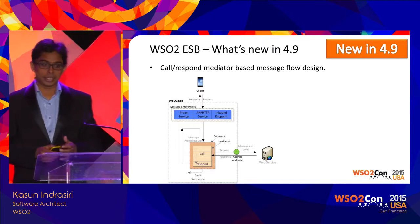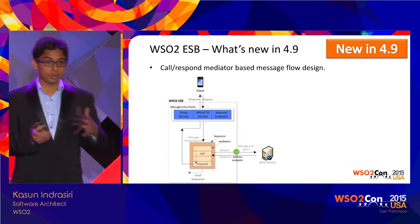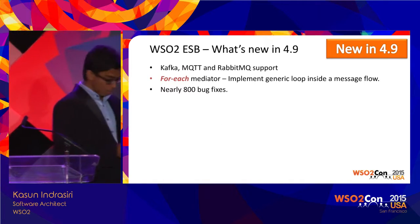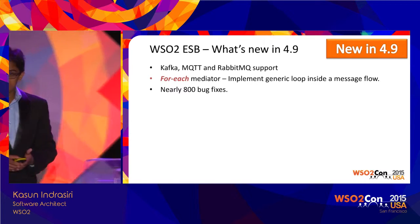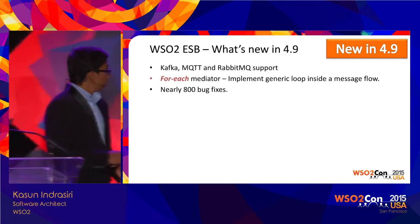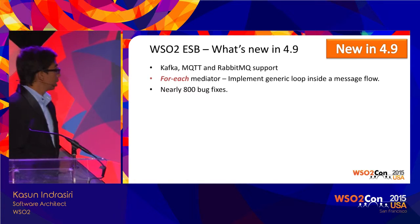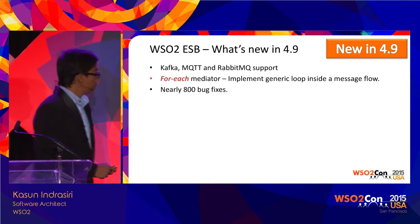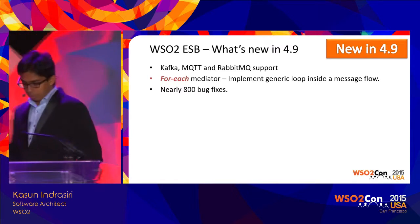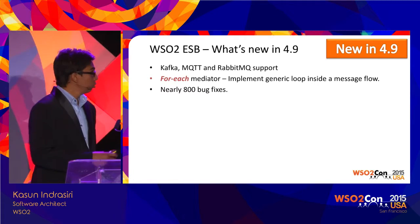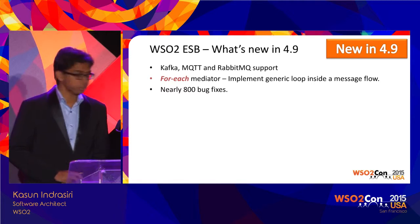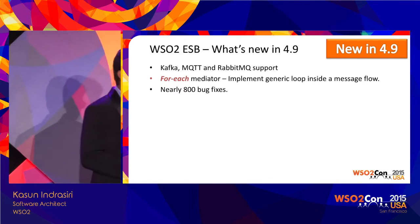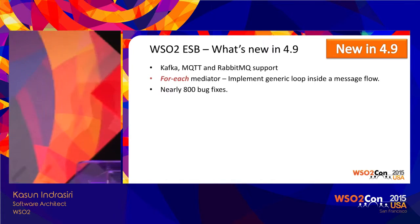This drastically reduces the complexity of message processing, and for lightweight service orchestration scenarios, it will drastically simplify your configuration. With the 4.9 release, we enhanced MQ support with the capability of integrating with Kafka, MQTT, and RabbitMQ — you can both receive and produce messages to these brokers. We also introduced a new mediator known as ForEach, capable of writing generic loops inside your mediation logic. This particular release contains nearly 800 bug fixes, representing quite a lot of stability work.